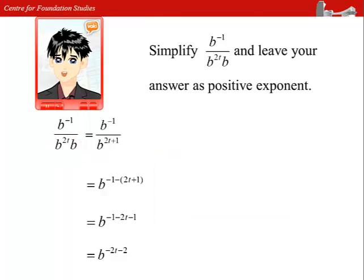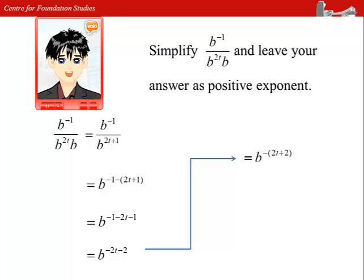Next, we can factorize the negative sign and write it as b to the power of negative bracket 2t plus 2. Now, we can express it as positive exponent and write it as 1 over b to the power of 2t plus 2.